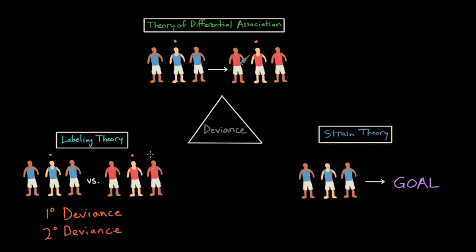So imagine the teammates of our athlete labeled his behavior as deviant and they exclude him from practices and tell him that he's a terrible player. The reactions may cause him to feel like he needs to continue to use steroids to be a better player. He may even escalate and use steroids more often or try more dangerous forms of the drug. His repeated deviance gives him a reputation and the stigma of deviance stays with him for the rest of his career.